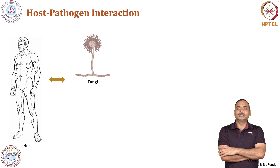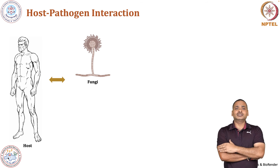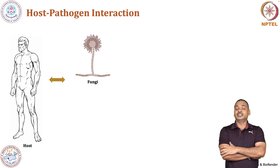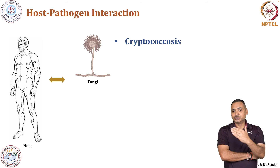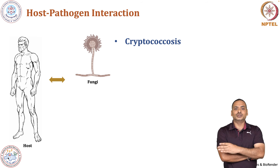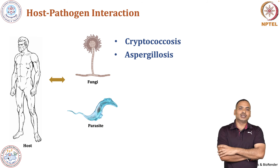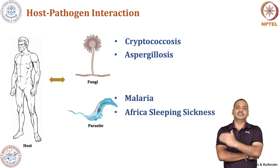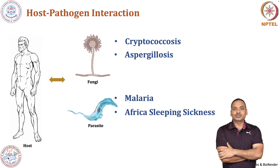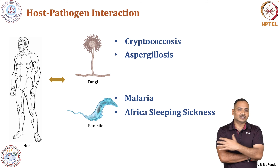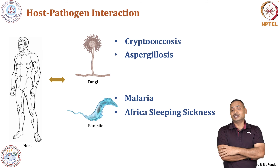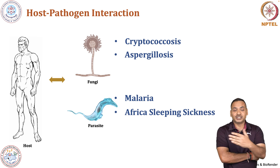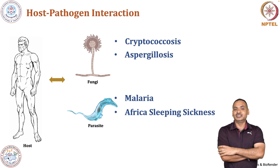We will discuss about host-fungal infection, which is mainly associated with immunocompromised individuals, and then we will talk about two diseases caused by fungi known as cryptococcosis and aspergillosis. We will finally take up host-parasite interaction where we will discuss about malaria and African sleeping sickness. Overall, when you complete this course, you will be able to understand how our defense system works and how it senses the array of microbial pathogens and develops appropriate immune response to eliminate these pathogens.